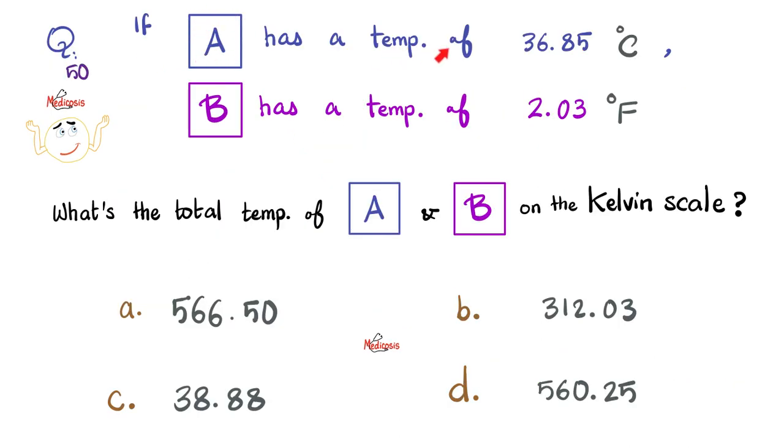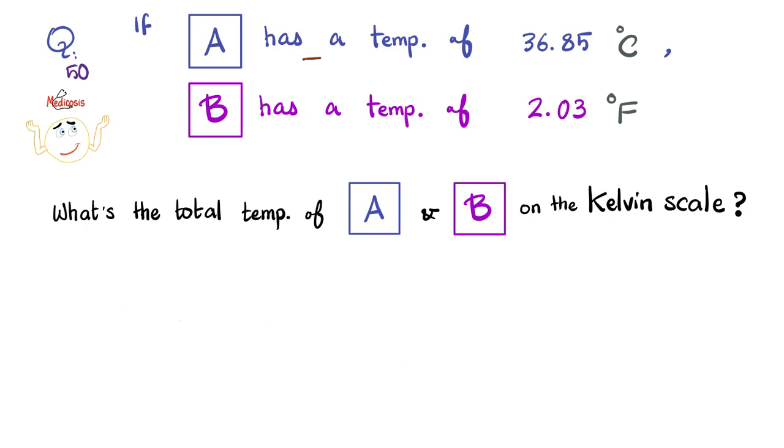Next, if the temperature of A is 36.85 degrees Celsius and the temperature of B is 2.03 degrees Fahrenheit, what is the total temperature of A and B together on the Kelvin scale? Please pause. First let's convert A into Kelvin. Kelvin equals Celsius plus 273.15. Since the temperature in Celsius is 36.85, add 273.15 to this, and you get 310 degrees Kelvin.